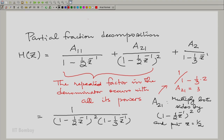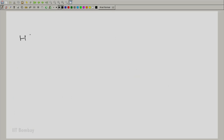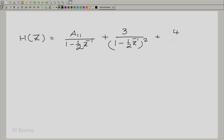Similarly, we can find A2 by multiplying both sides by (1 - (1/3)Z⁻¹) and then putting Z = 1/3, so Z⁻¹ = 3. That leaves 1 / [(1 - (1/2)·3)²] = 1 / [(1 - 3/2)²] = 1 / [(-1/2)²] = 1 / (1/4), so A2 = 4. We now have A21 = 3 and A2 = 4, and we need to find A11.